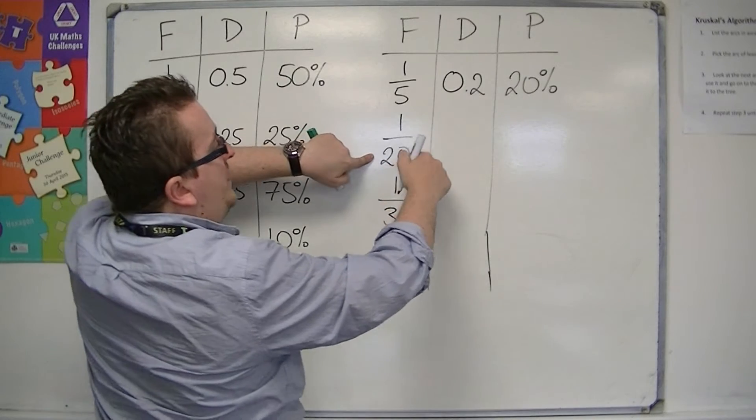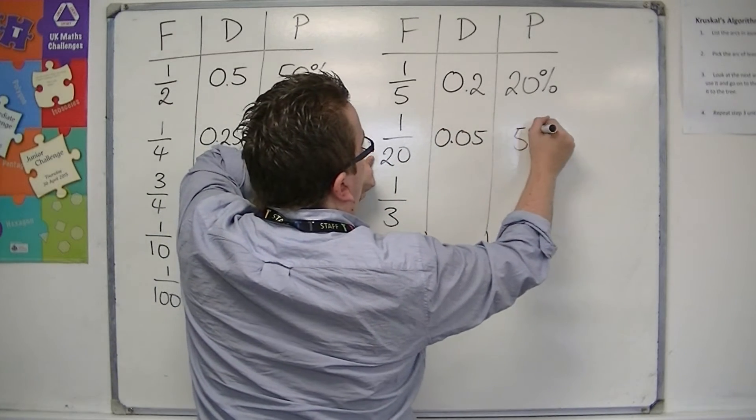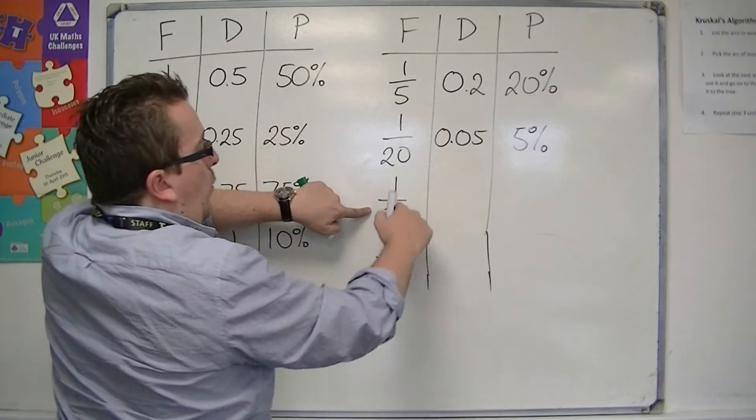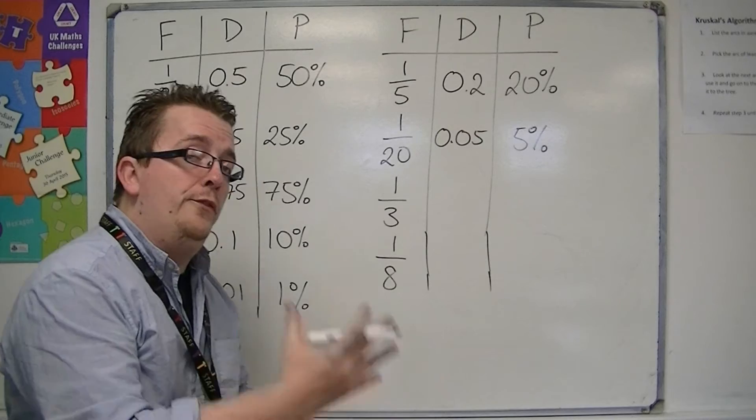1 divided by 20 is 0.05, which is 5%. And, 1 divided by 3, this is where it gets a little bit tricky, because 1 divided by 3, if you try that.